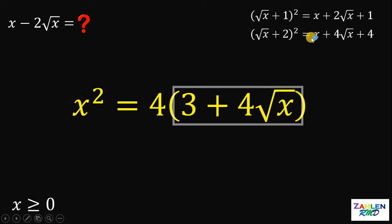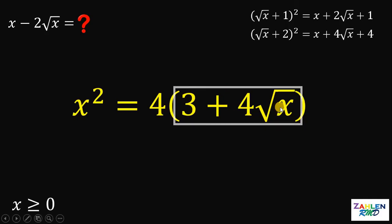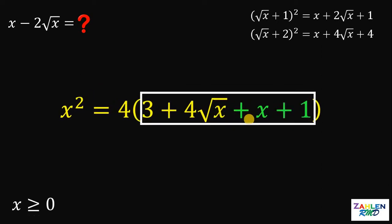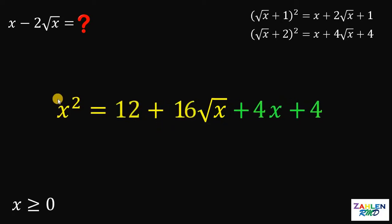We can use this expansion provided that we have x plus 4 times square root of x plus 4. To make the expression 3 plus 4 times square root of x equal to x plus 4 times square root of x plus 4, what we're going to do is to add x plus 1. Take note that we now have x plus 4 times square root of x, and 3 plus 1 is just 4. But to keep it balanced, we need to add the same thing on the left-hand side. Before that, let's distribute this 4 to see what we're going to add on the left-hand side.